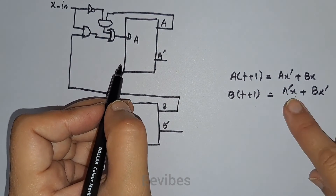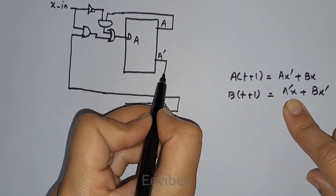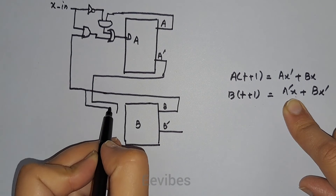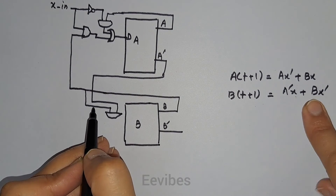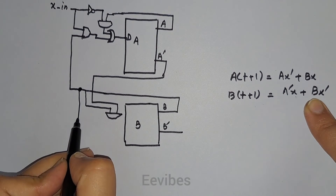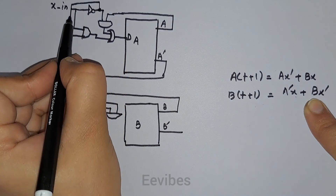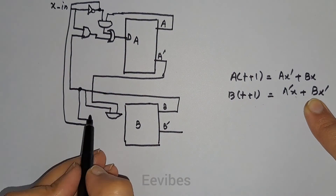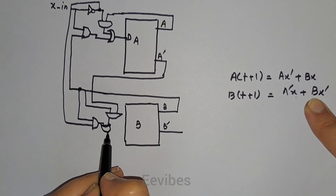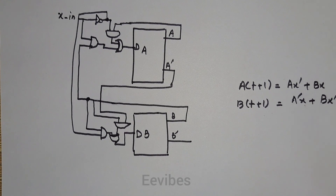Similarly, B(t+1) = A'x + Bx'. We AND A-complement with x, then AND B with x-complement. We OR these two AND gate outputs together, and the result is connected to the D input of flip-flop B. This is the final circuit diagram. Thank you for watching.